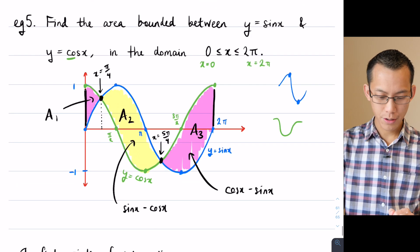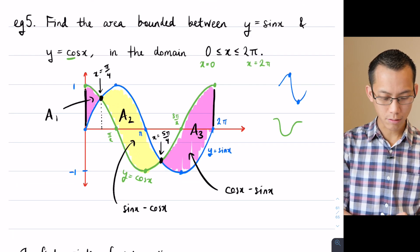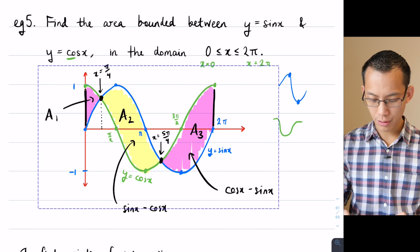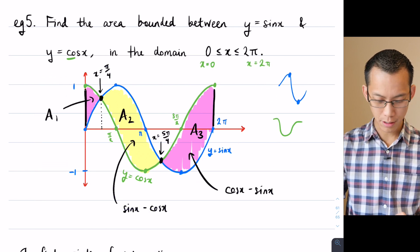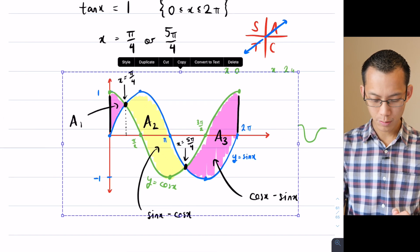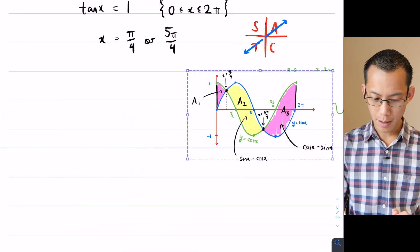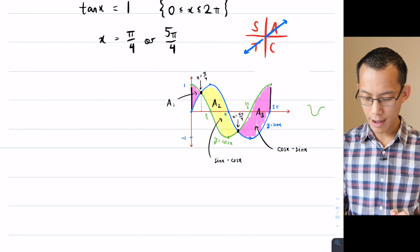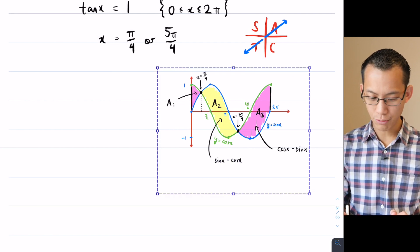So A₁, A₂, A₃, let's deal with each one in turn. Now what I'm going to do is I'm going to duplicate this graph just so we can have it close to where we're doing our working down below over here. I'll just make it a bit smaller because we don't need it to be enormous, but I want to be able to see it.